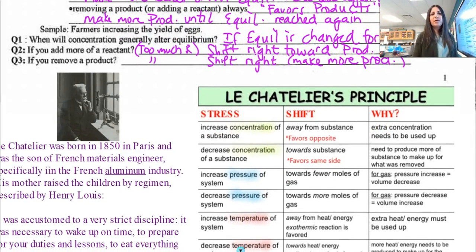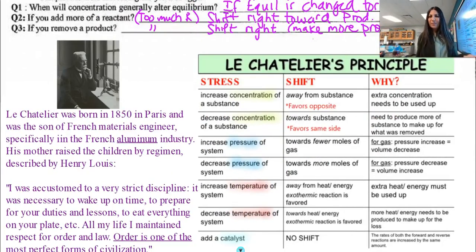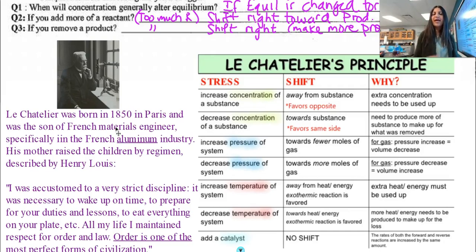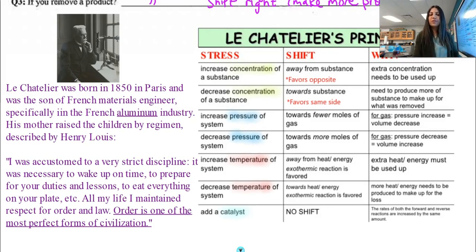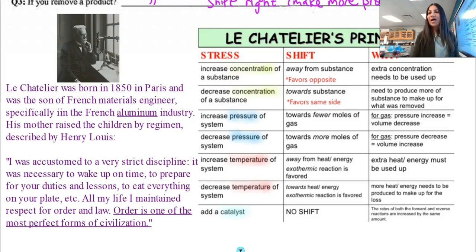Here's a little blurb about Le Chatelier. He was born in 1850 in Paris, the son of a famous engineer in the aluminum industry. A quote from him: 'I was accustomed to very strict discipline — wake up on time, prepare for your duties, eat everything on your plate. All my life I maintained respect for order and law. Order is one of the most perfect forms of civilization.' It's cool how that applies to his principle — if you do this, then this happens.